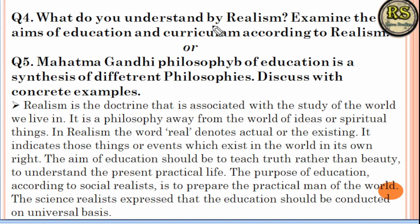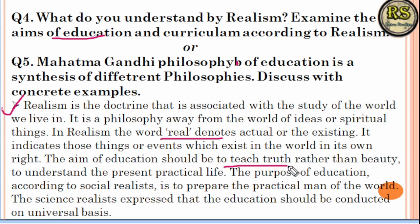Question number 4 is: What do you understand by Realism, and what is the aim of education according to Realism? Realism is a philosophy far from idealism and spiritual thinking. The aim of education under realism is to study truth and understand practical life. Social realists say education should prepare humans to be practical people of the world, while scientific realists consider education to have a universal basis.